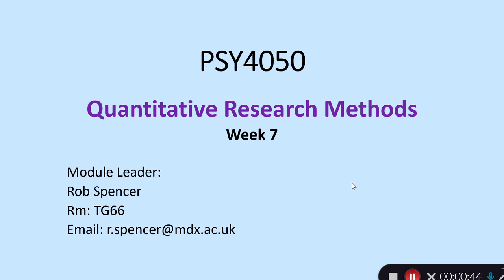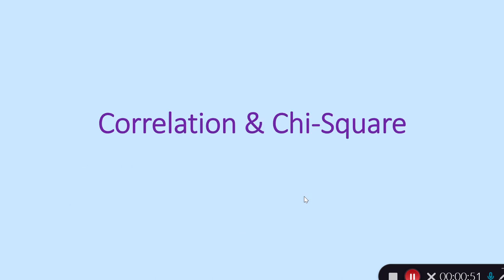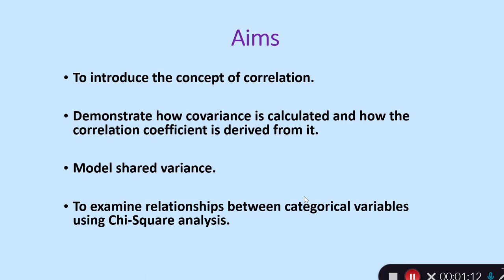So today, this is week seven, our fourth lecture. What we're talking about today is correlation and chi-square. Last week we focused on comparing groups — comparing means, differences between group means, t-test and ANOVA — but this week we're looking at relationships and associations between variables, specifically correlation and chi-square.